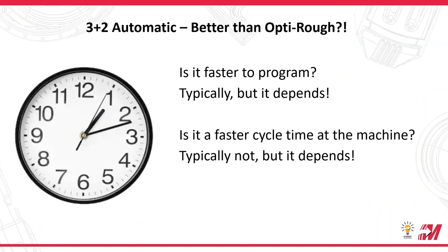So is 3 Plus 2 Automatic better than OptiRough? OptiRough is awesome, so that's a big statement. Breaking it into questions: is it faster to program? Typically yes — it is generally faster to program a roughed-out toolpath, but it depends on what kind of precision you're looking for out of your roughing. If you just want to get material off with as little programming effort as possible, then yes, 3 Plus 2 Automatic is going to be faster. But if you're looking to remove material in a specific way, you'll probably burn time trying to get 3 Plus 2 to perform the way you want.